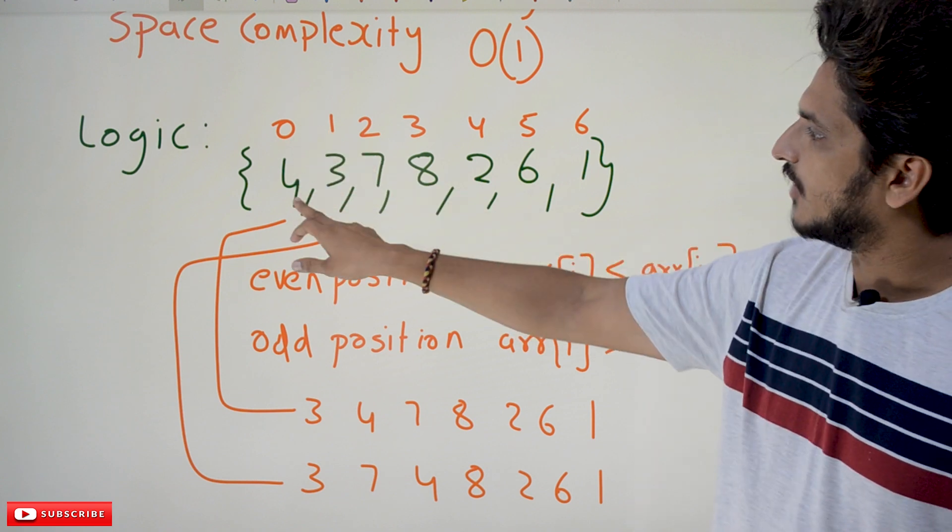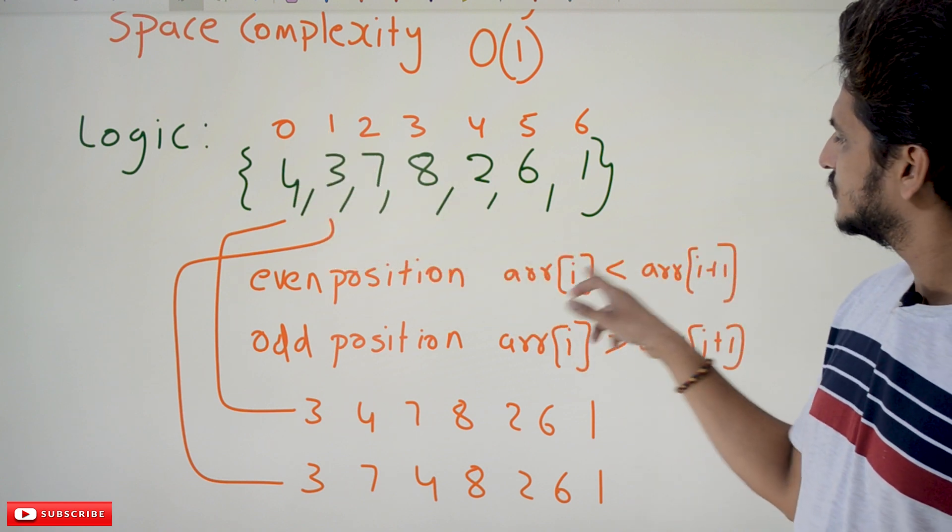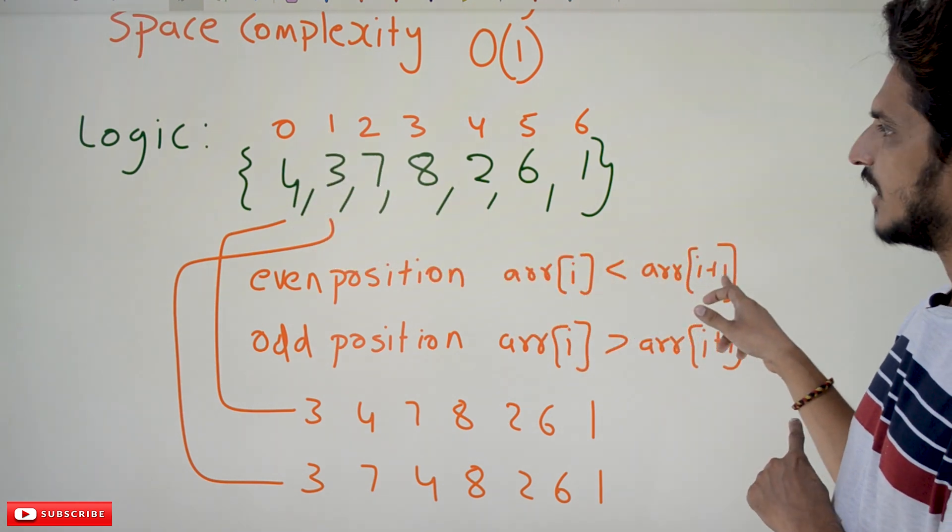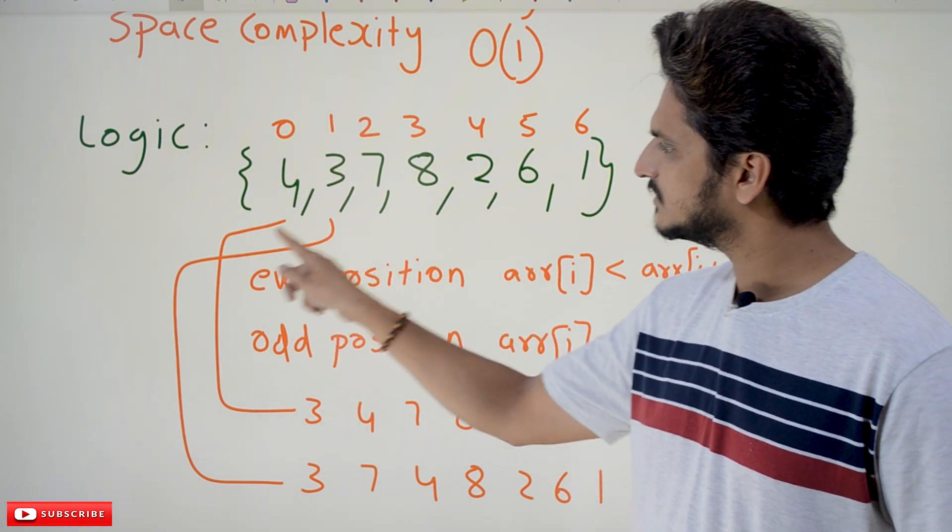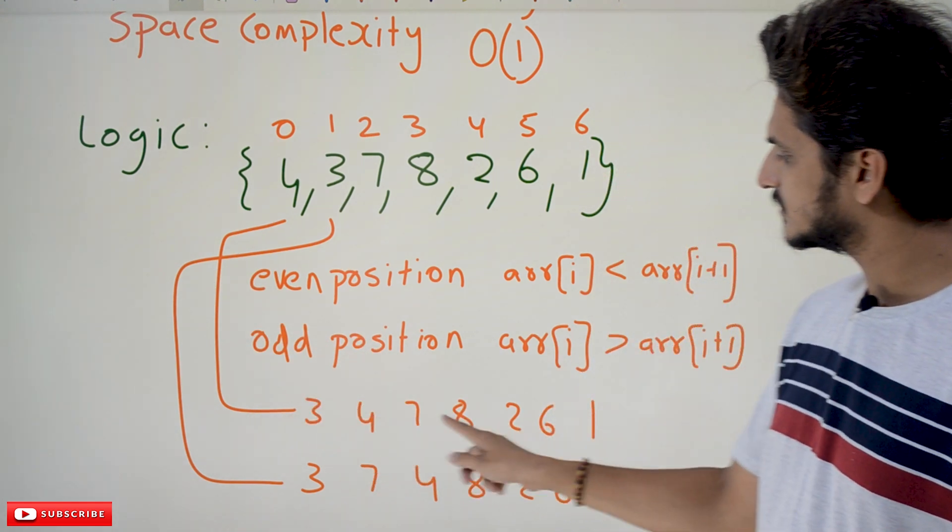If it is in the even index, we have to apply the condition: even element present in the even position, you have to check the condition arr[i] should be always less than arr[i+1]. So if it is not there, swap it. So from this you are going to get 3, 4, 7, 8, 2, 6, 1.